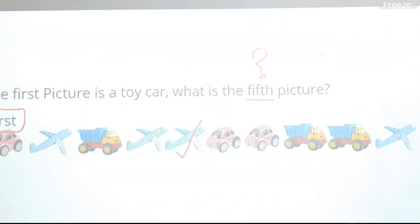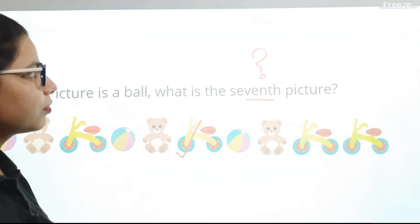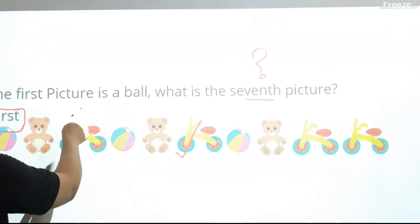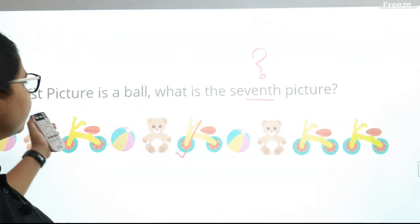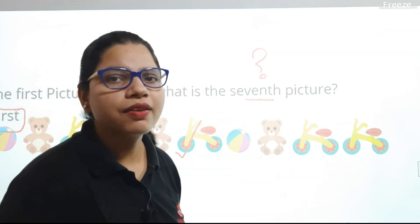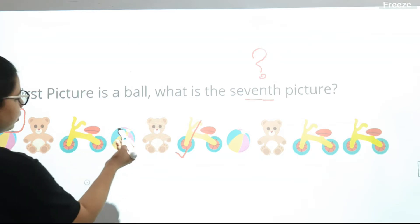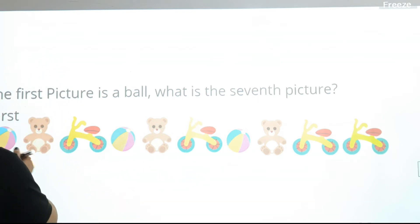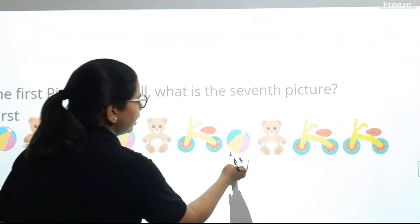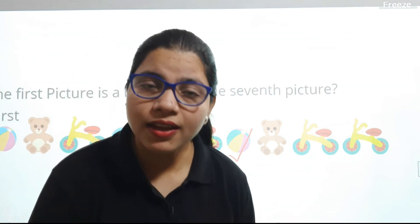Next question: the first picture is a ball. What is the seventh picture? Let's start ordering: first, second, third, fourth, fifth, sixth — and the ball is the seventh picture. How many of you answered ball as the seventh picture? Very good!